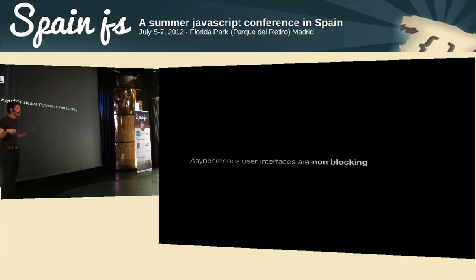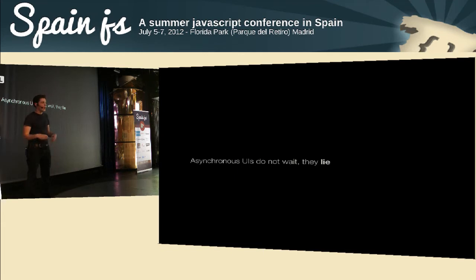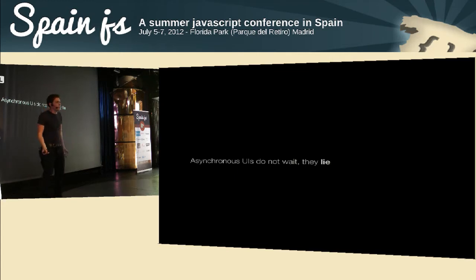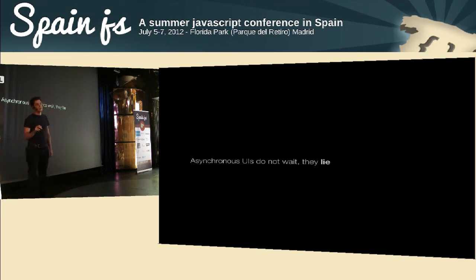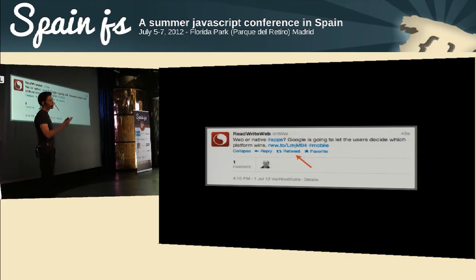So what are asynchronous user interfaces? The key thing is they don't block — whenever the user interacts with your application, none of those interactions cause the interface to block. The other thing is that they lie — they present a story to the user that isn't actually true. To an engineer that seems crazy, but it's a design decision rather than an engineering decision. Twitter, for example: when you click retweet, it appears to have retweeted instantly, but in reality it sends a network request, goes on a messaging queue, through four processes, until a bit is flipped in the database.